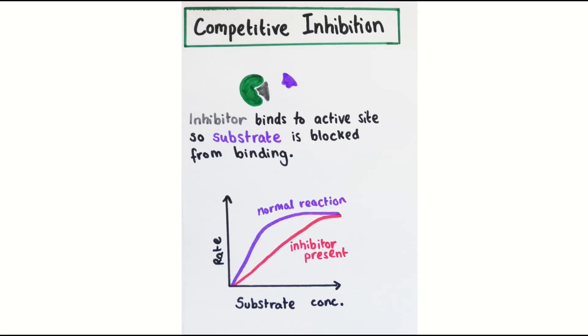A competitive inhibitor is a molecule that is similar in shape to the substrate and so can bind to the enzyme's active site, blocking it from the substrate. The graph shows how the rate of reaction changes as the substrate concentration increases. At low substrate levels, the inhibitor outcompetes the substrate, so the reaction rate is lower. But at a higher substrate level, the substrate starts to out-compete the inhibitor, and so the rate reaches almost its optimal level.